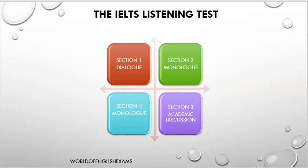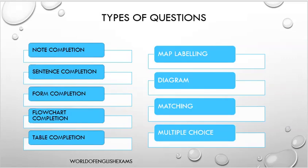Now let's see how many types of questions there are, then we will focus on form completion. There are various question types in the listening test: note completion, sentence completion, form completion, flow chart completion, and table completion - these five come under fill in the blanks. Other than fill in the blanks, we have map labeling, diagram labeling, matching, and multiple choice. It is very important to learn strategy individually for each type, as a single technique cannot work for all of them.